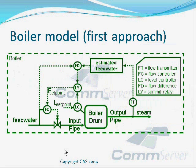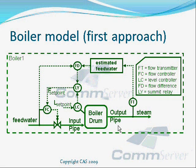This diagram shows the first approach to the boiler model. The boiler produces steam from water. It consists of an input pipe that feeds the boiler with water, a boiler drum where steam is produced, an output pipe that outputs the produced steam, some controllers like flow controller and level controller, some transmitters, sensor and relay elements. The next step is to prepare an OPC UA address space model diagram.